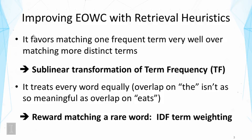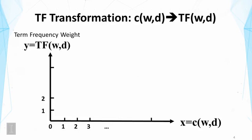So to address the first problem, we can use a sublinear transformation of term frequency. That is, we don't have to use a raw frequency count of term to represent the context. We can transform it to some form that wouldn't emphasize so much on the raw frequency.